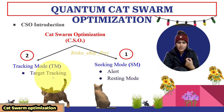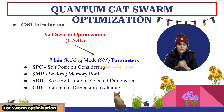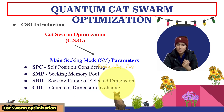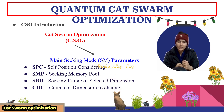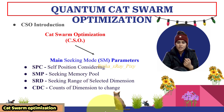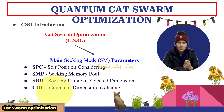In tracing mode, cats are chasing the target or food. In the seeking mode we have four main parameters: SPC, that is self-position considering; SMP, that is seeking memory pool; SRD, that is seeking range of selected dimension; and CDC, that is counts of dimension to change. In the seeking mode, using this memory the virtual cats can remember their positions in the search space. CDC is the count of dimensions to change.